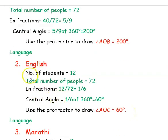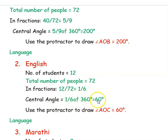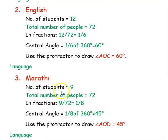The next language is English, spoken by 12 students. The fraction is 12 divided by 72, that is 1 by 6. The central angle is 1 by 6 into 360 degrees, equal to 60 degrees. The third language is Marathi, spoken by 9 students. The fraction is 9 divided by 72, which is 1 by 8. The central angle for Marathi is 1 by 8 into 360 degrees, which is 45 degrees.